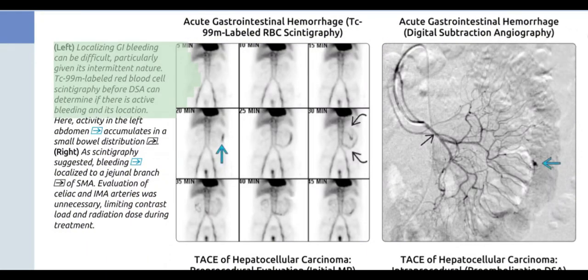Localizing GI bleeding can be difficult, particularly given its intermittent nature. Tc-99m labeled red blood cell scintigraphy before DSA can determine if there is active bleeding and its location. Here, activity in the left abdomen accumulates in a small bowel distribution. As scintigraphy suggested bleeding localized to a jejunal branch of the SMA, evaluation of the celiac and IMA arteries was unnecessary, limiting contrast load and radiation dose during treatment.